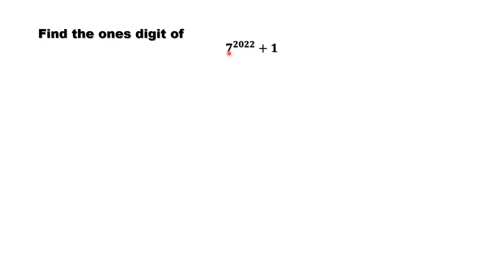49 times 49, the ones digit is what? 9 times 9 is 81, 1 is the ones digit. So here, after power of 4, the ones digit comes back to 1.